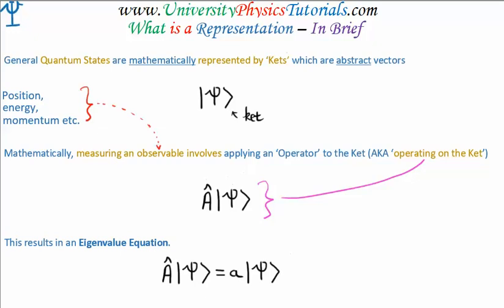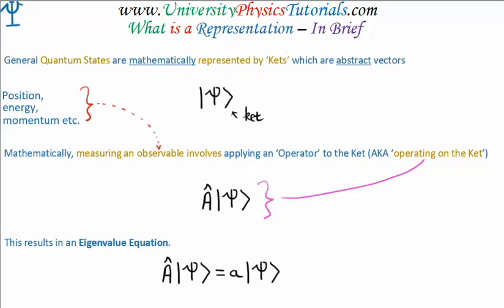The state of a quantum system is known as its quantum state. Mathematically, we represent a quantum state by something we refer to as a ket, and these are abstract vectors. A ket is written in this form here, and this is something I'm sure you've seen in the past. So a ket is an abstract vector which represents a quantum state. Now, what happens if we want to measure something about the state? We want to know its position, its energy, its momentum, or something. By the way, these are referred to as observables.